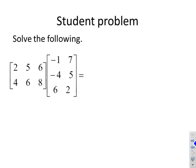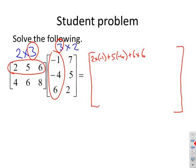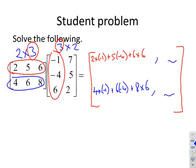Here's a problem to try. First check dimensions: we have 2×3 and 3×2, so the column dimension of the left matches the row dimension of the right, and the result will be 2×2. The top-left element is 2×(−1) + 5×(−4) + 6×6, taking that row times that column. The element below is 4×(−1) + 6×(−4) + 8×6. The other two elements are left for you to fill in.